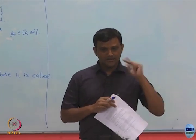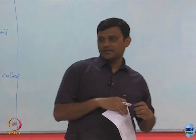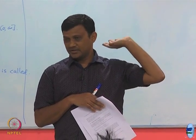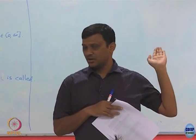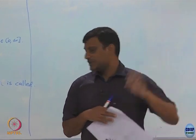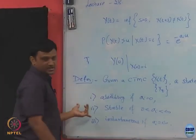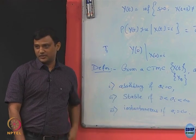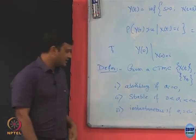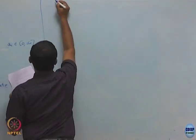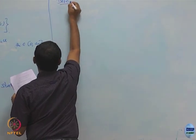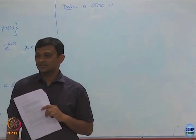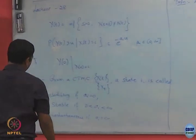In our DTMC we had a classification of states into transient, recurrent, null recurrent, positive recurrent, and absorbing. Here in CTMC we have an additional classification based on the parameter ai — whether it is 0, infinity, or something in between. Going forward, we will focus on CTMCs where the states are stable and well-behaved.